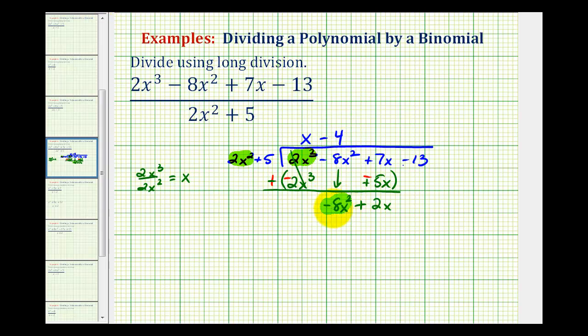Or if we need to, we can divide negative 8x² by 2x². Which is also equal to negative 4.